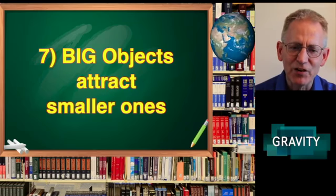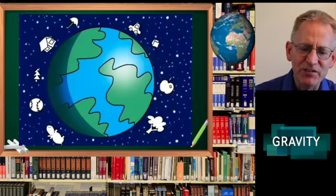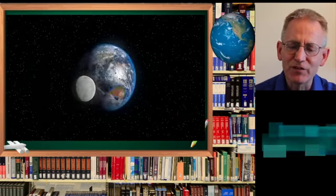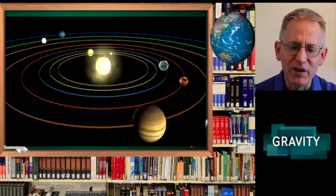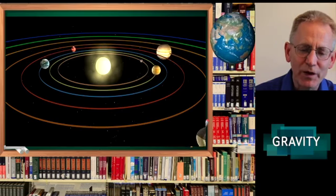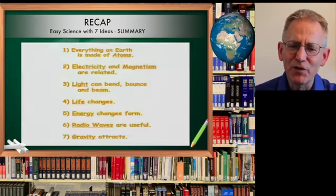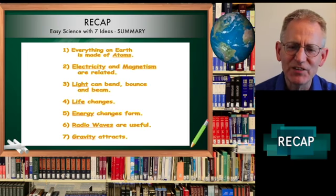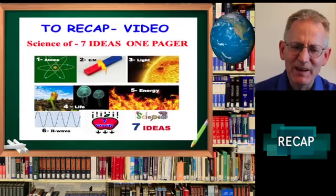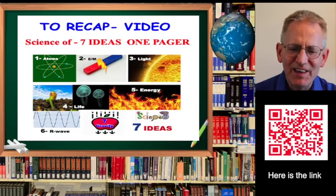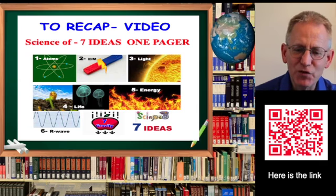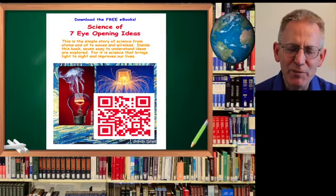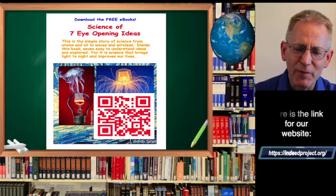Big objects attract smaller ones. The earth attracts things like balls, apples, and us because of gravity. The earth attracts the moon. The sun attracts the earth and the entire solar system with gravity. It's important for you as a teacher to understand the seven ideas and the questions the students may ask. To recap, recommend that you watch this video of Easy Science with Seven Ideas. It's the true story of science from atoms alone to galaxy glue. You can also get the free e-book either on the website or by this link.